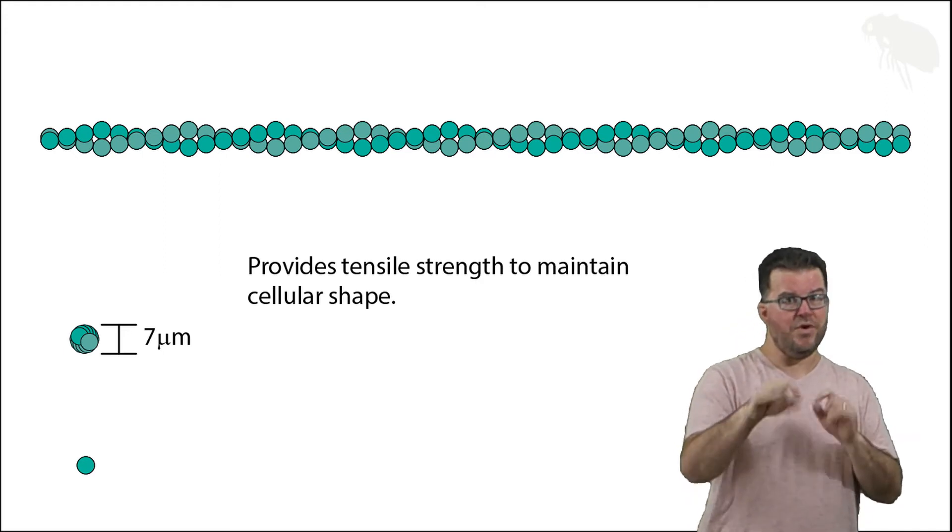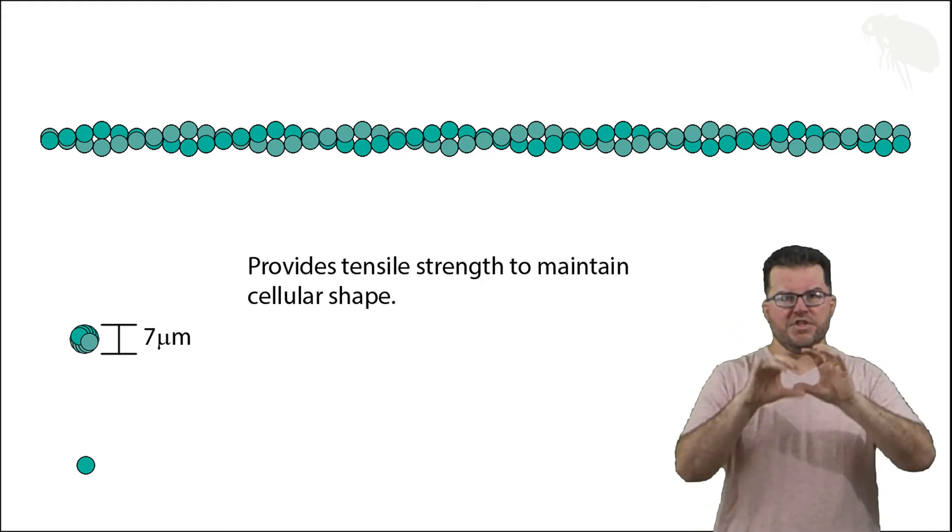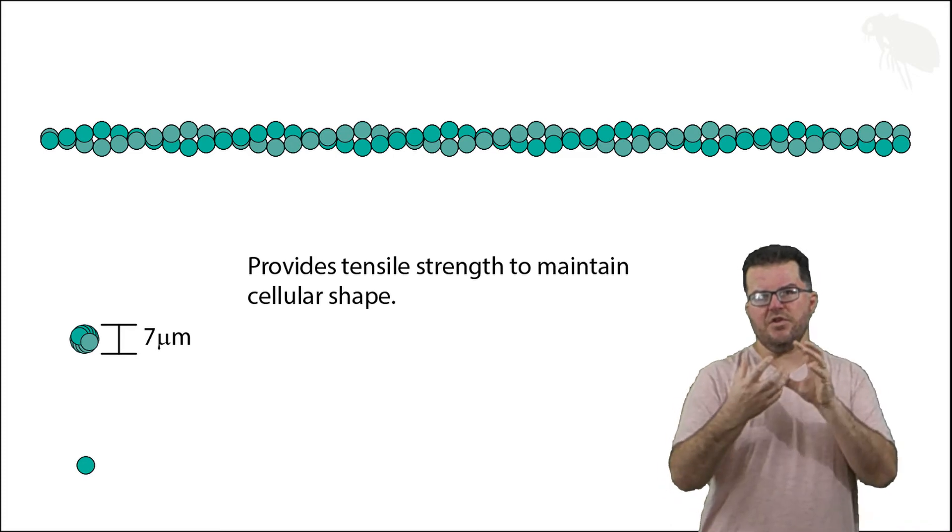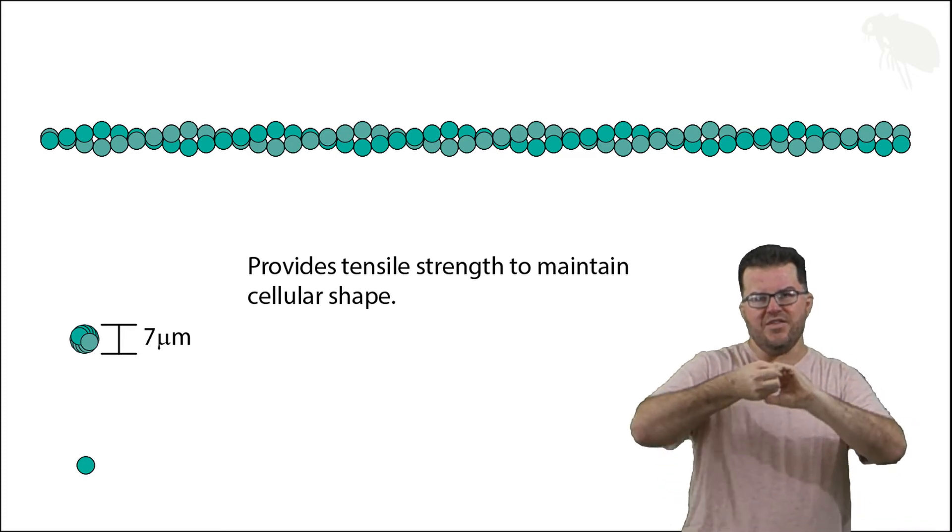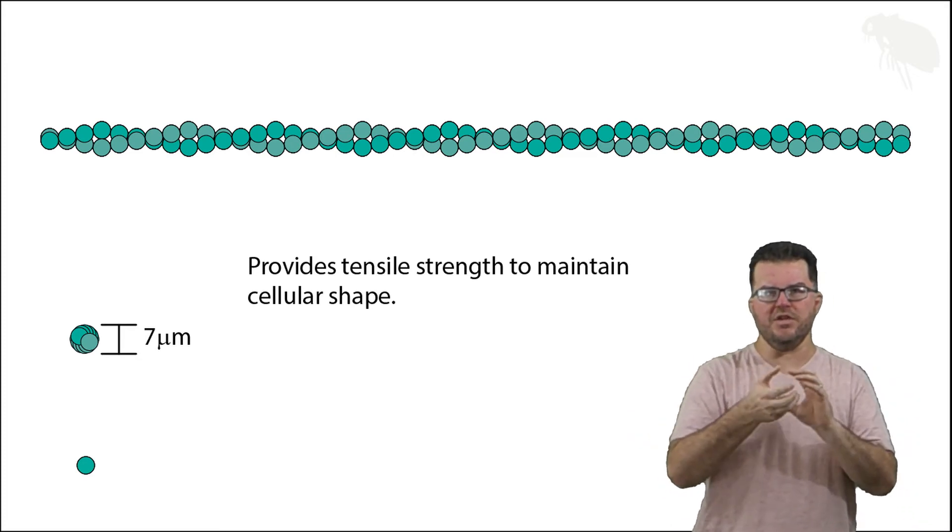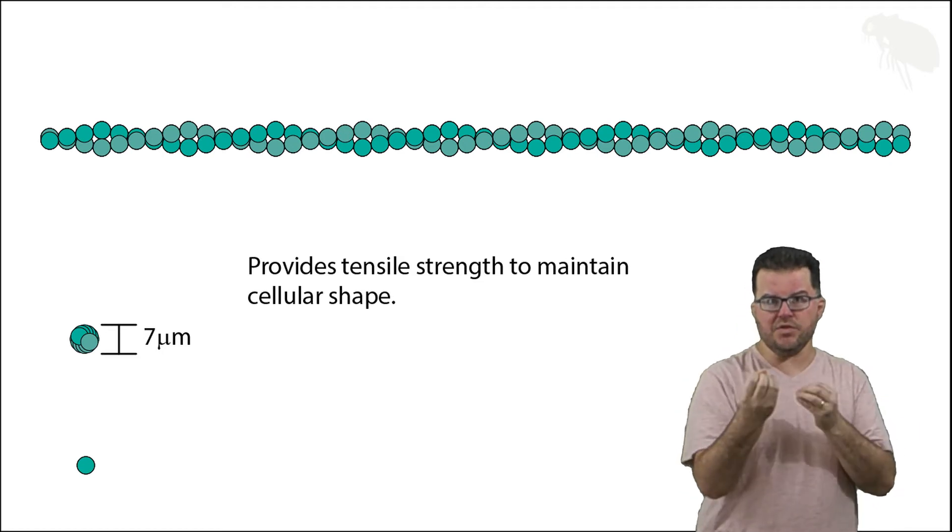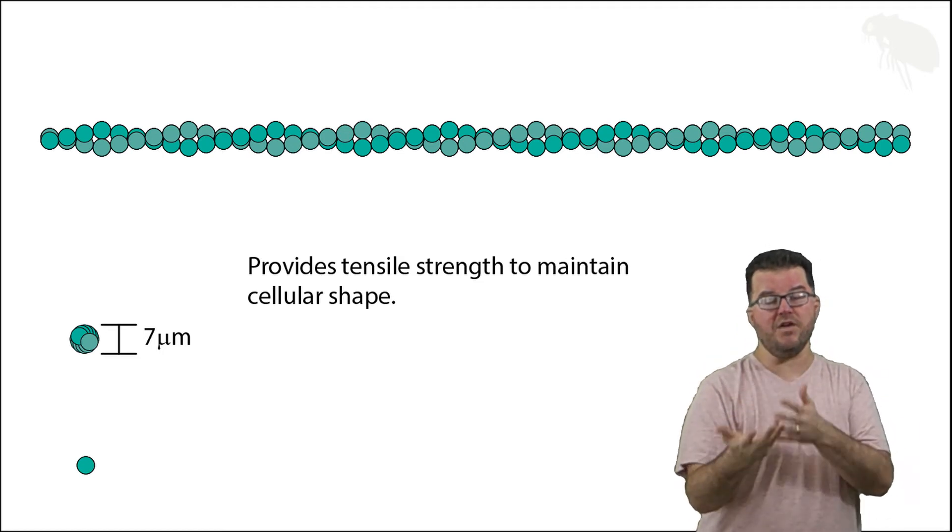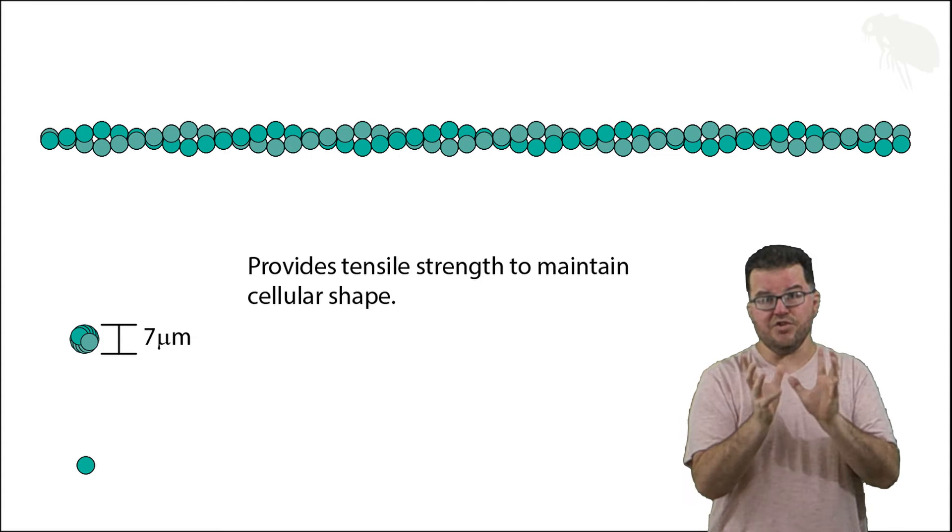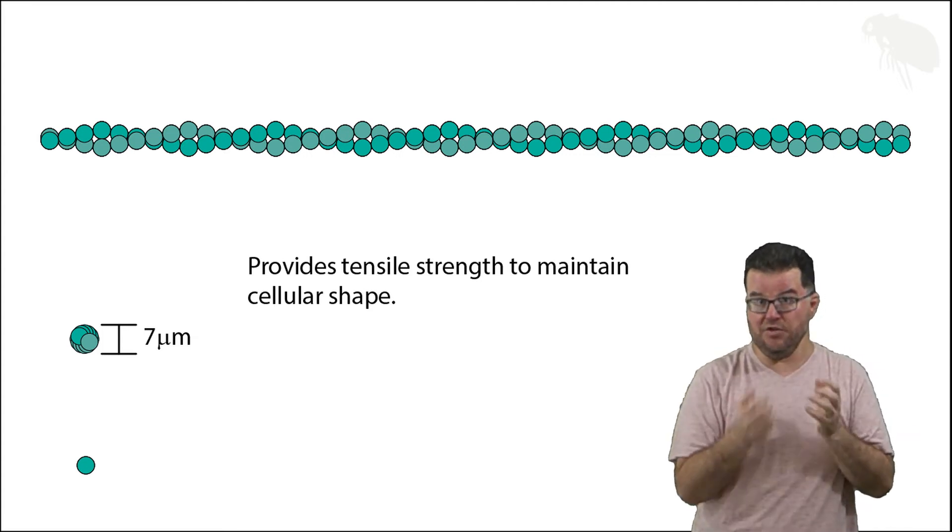Some cells, and I'm thinking of red blood cells, have a particular shape they maintain but then they're going to have that shape contorted and they need to recoil to their original starting shape. And so a high tensile strength in the membrane supported by microfilaments allows these cells to retain that shape after being deformed.